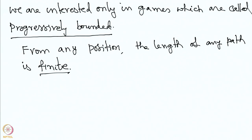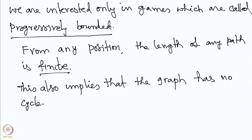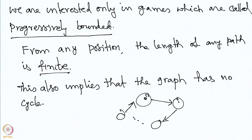This also immediately implies that the graph has no cycle. If there is a cycle — from a position it goes to another, then another, and then comes back — the game can cycle along that path, producing an infinite path, and we do not want this. So no cycle is an important property of these graphical games which are progressively bounded.